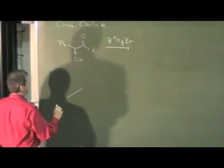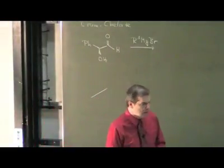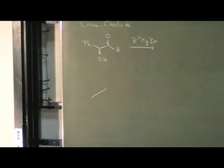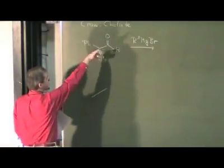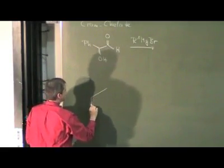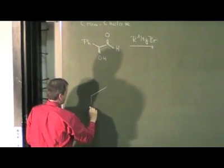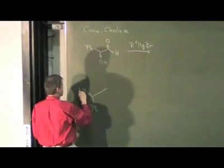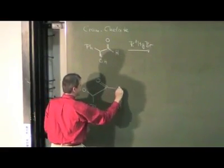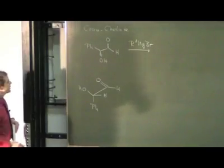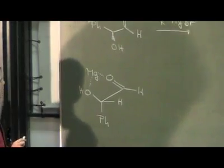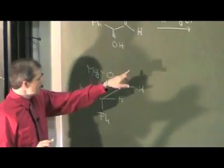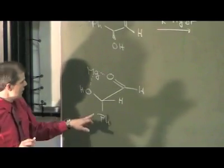And if we draw this in a sawhouse projection, you should be able to make an educated guess which one of the diastereomers should preferentially form, and that the magnesium is chelating our compound in this way here, and then a nucleophile can attack from the top side or from the bottom side of this conformation.